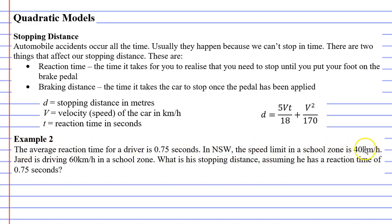So far, this information isn't really relevant to solving the question. Jared is driving 60 kilometres an hour in a school zone, so he's going over the speed limit, and it wants us to calculate the stopping distance, assuming that he has a reaction time of 0.75 seconds.